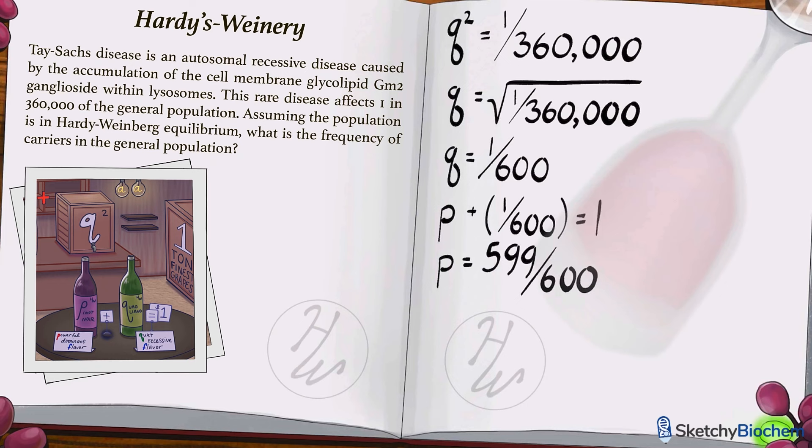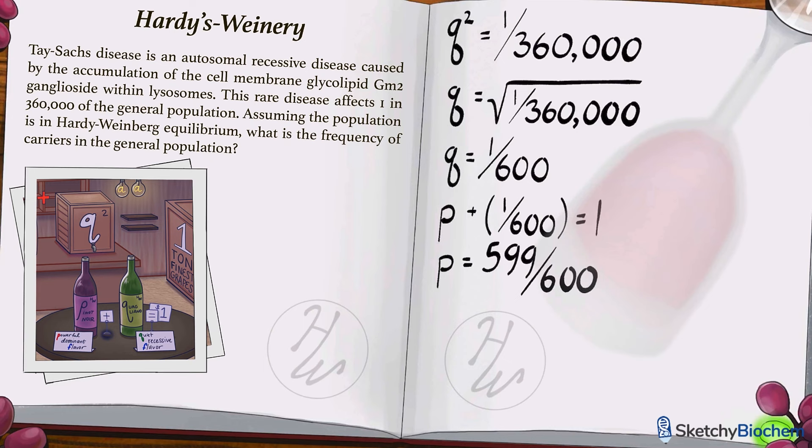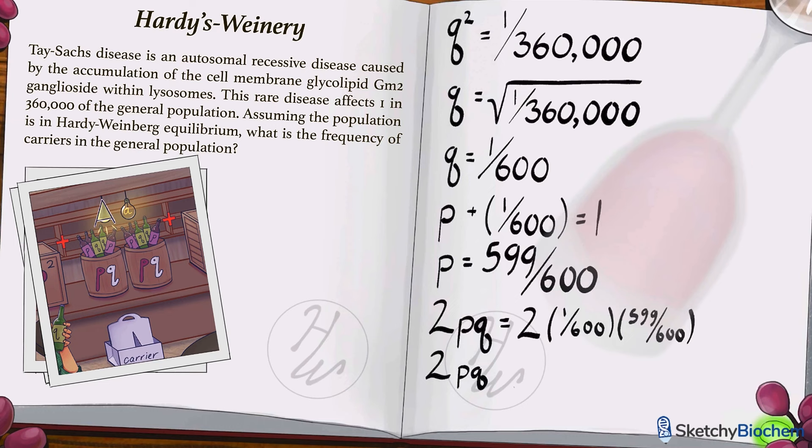Now we can use these values in the Hardy-Weinberg equation to find the frequency of heterozygotes, since the question is specifically asking about carriers. Heterozygotes are represented by 2PQ, so 2 times 599 over 600 times 1 over 600. To save time, just assume that 599 over 600 is approximately 1, so that gives us 2 over 600, or 1 over 300. The Tay-Sachs carrier frequency in the general population is approximately 1 over 300.